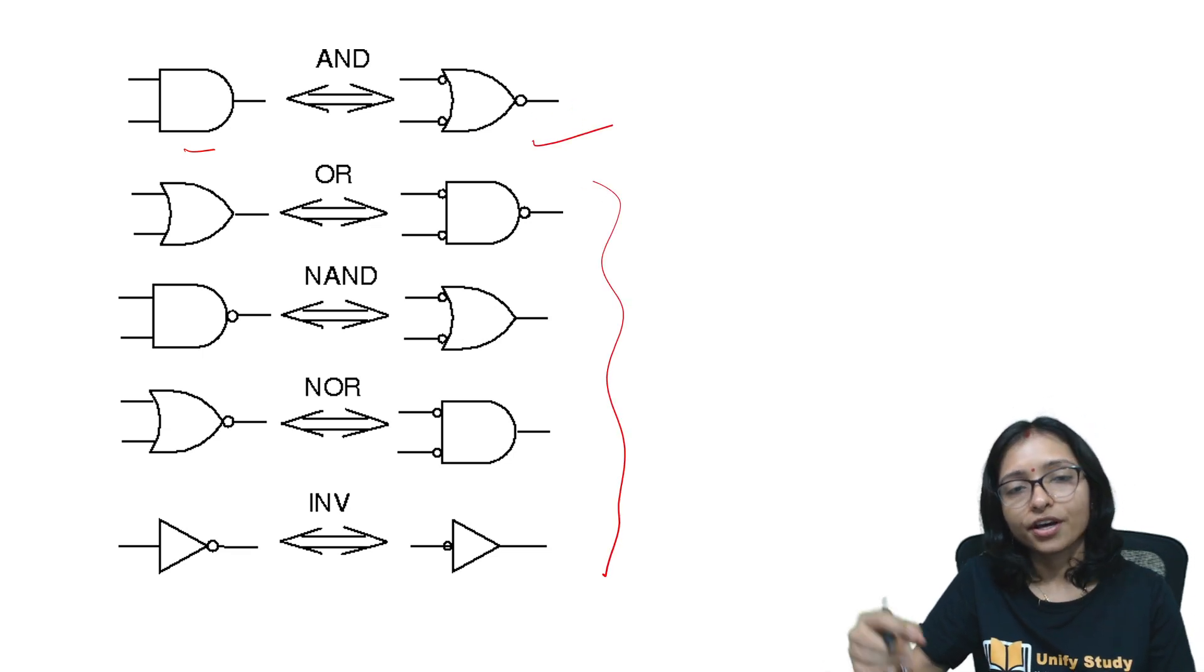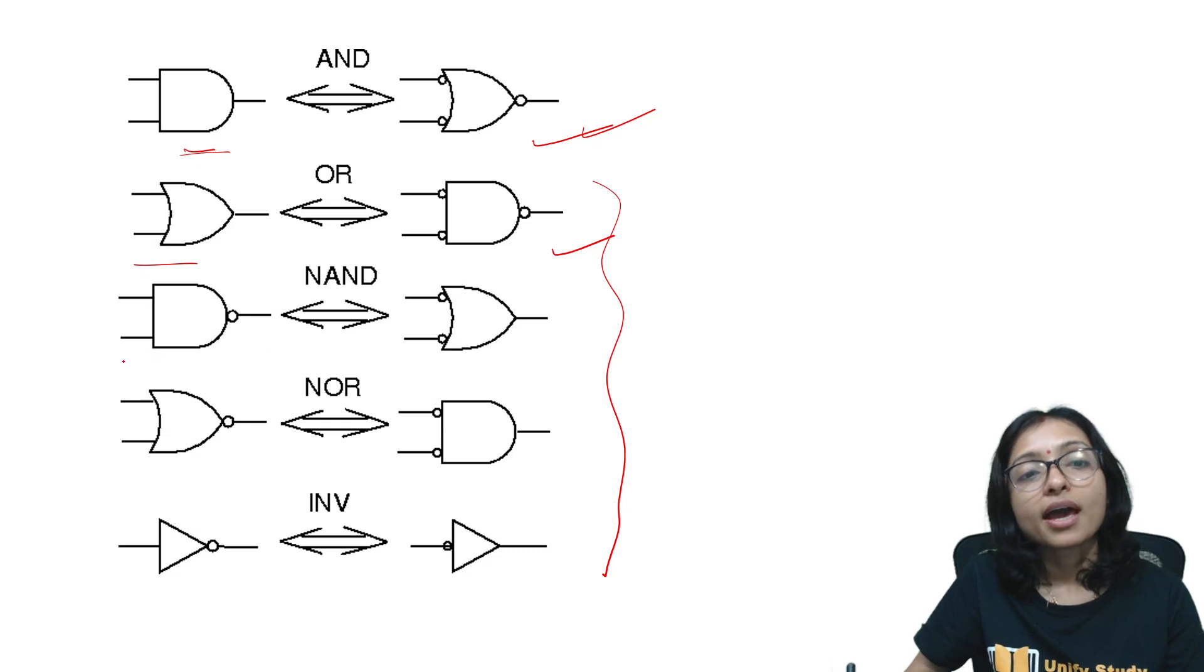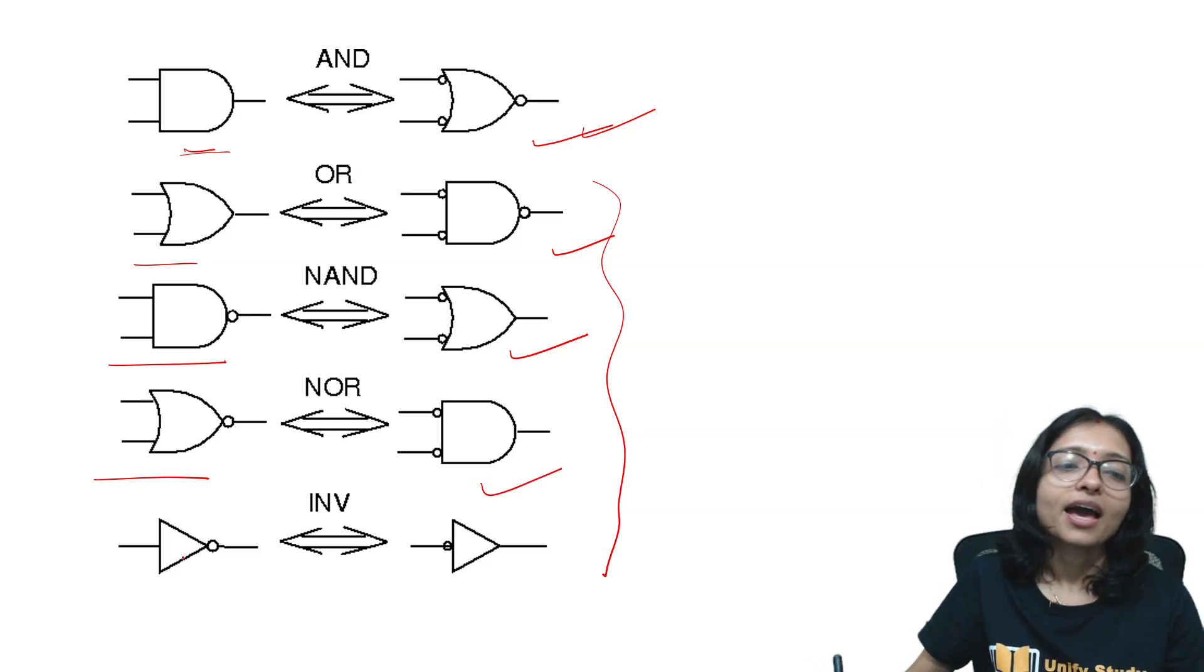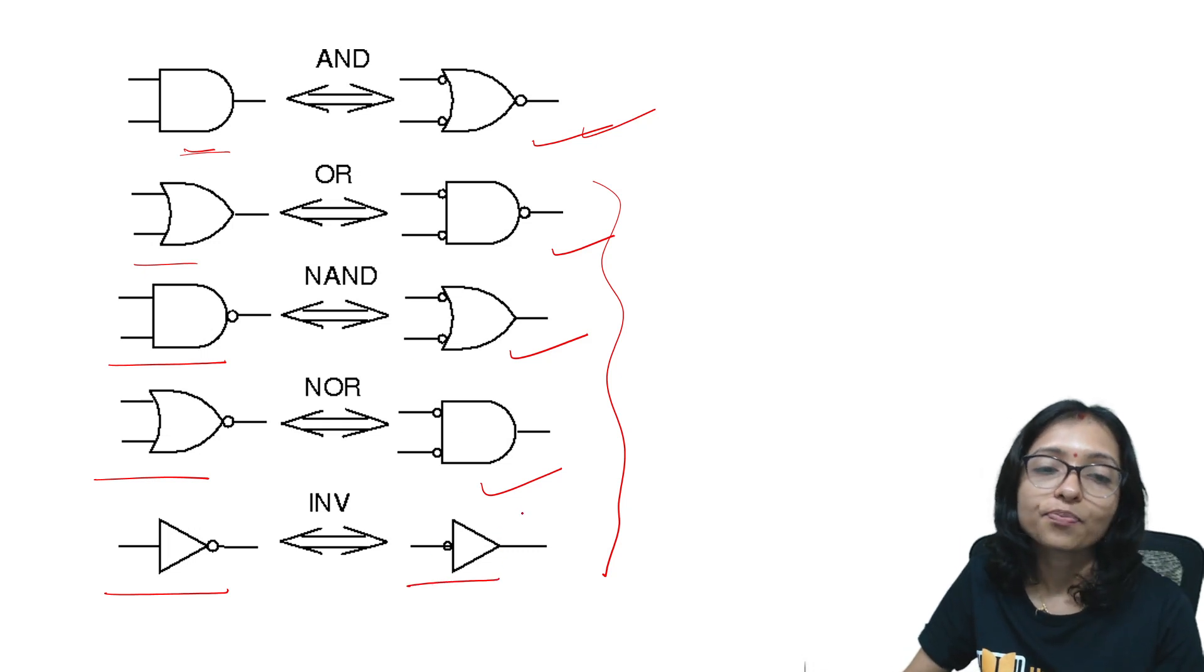This is the final your revision equivalent list whenever you are doing. Then AND it is equivalent to this one, OR it is equivalent to this one, NAND is equivalent to bubbled OR, NOR is equivalent to bubble AND, and complement that is your NOT gate is equivalent to bubbled complete bubbled.